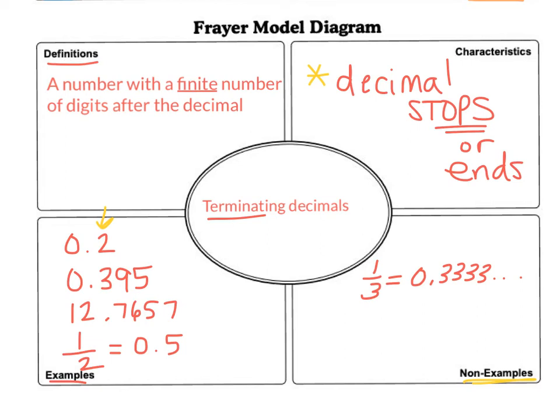What about 0.6 with a bar over it? That's not a terminating decimal. That is a repeating decimal.